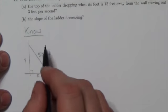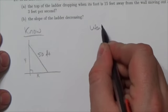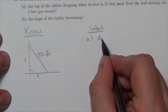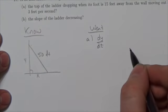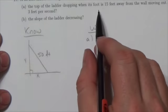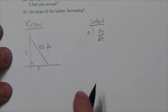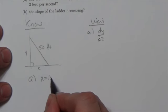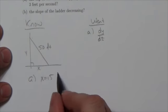So we are interested in how fast the top of the ladder is dropping. So we want to know dy by dt. And we are given when its foot is 15 feet away. So for A, we're given that x is going to be equal to 15 at a specific moment, 15 feet.